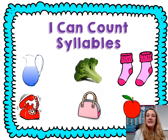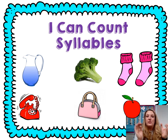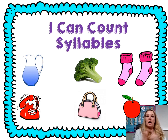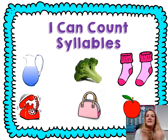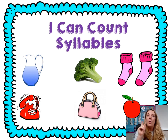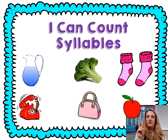Let's clap and count some syllables. Pitcher — pitcher — two. Broccoli — broccoli — three. Socks — socks — one. Telephone — telephone — three. Purse — purse — one. Apple — apple — two.